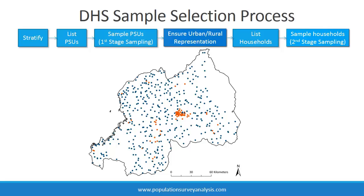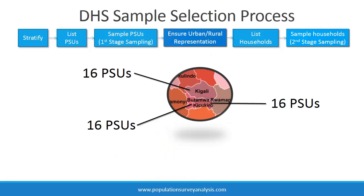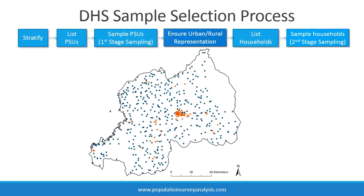Urban areas are shown on this map in orange. How exactly was oversampling performed in the Rwanda 2010 DHS? The implementers increased the number of sampled PSUs from 16 to 20 in each of the three districts that comprise the capital city, Kigali. Oversampling a subpopulation leads to unequal probability of selection, which is why it is important to use sampling weights when you analyze DHS data. People from Kigali are overrepresented in this sample, and sampling weights will be covered in greater detail later.